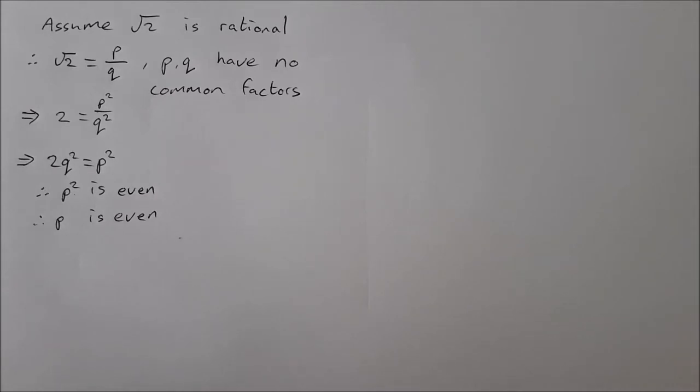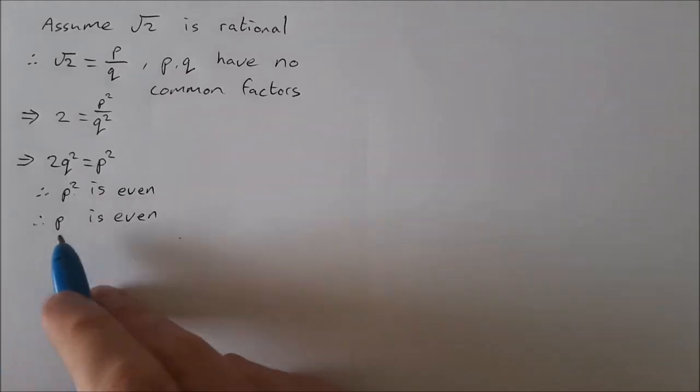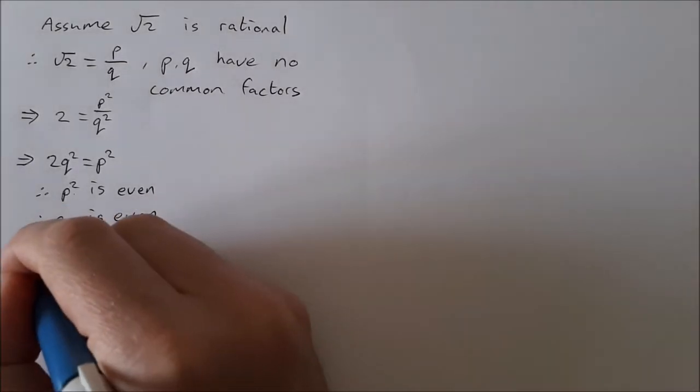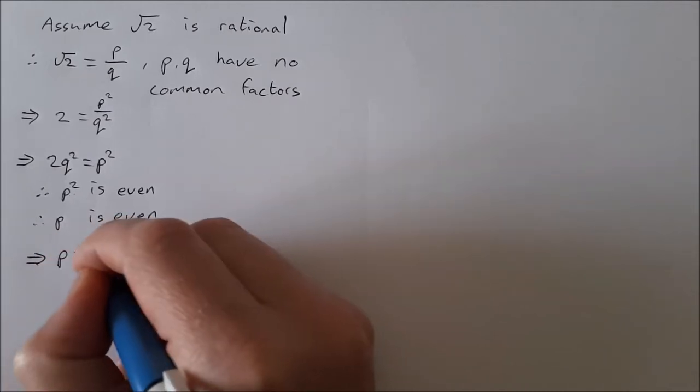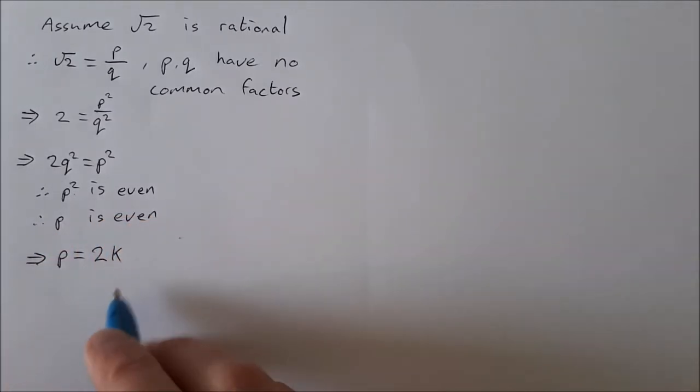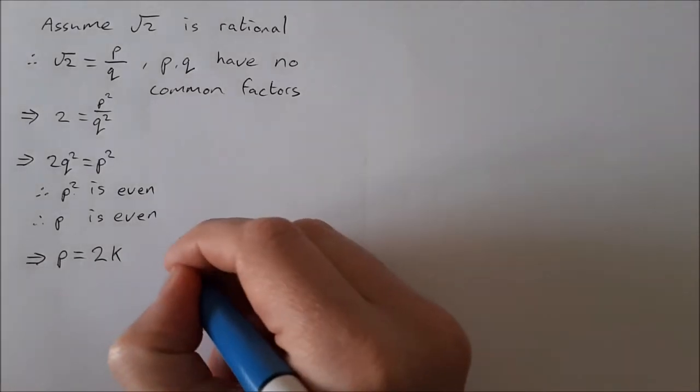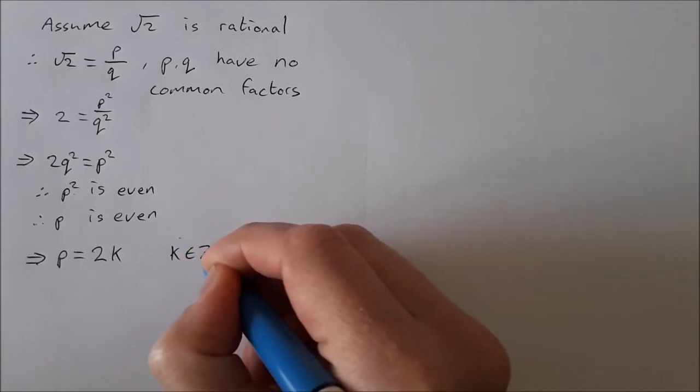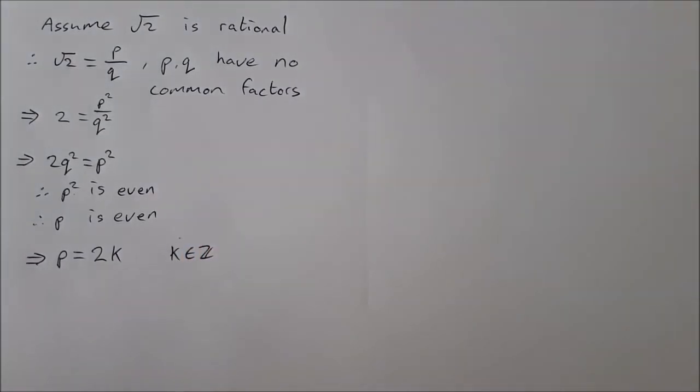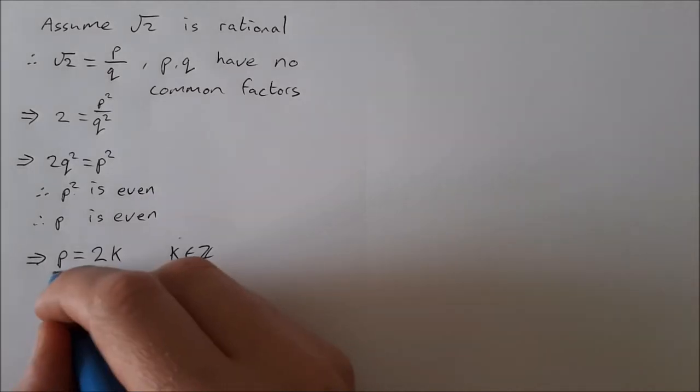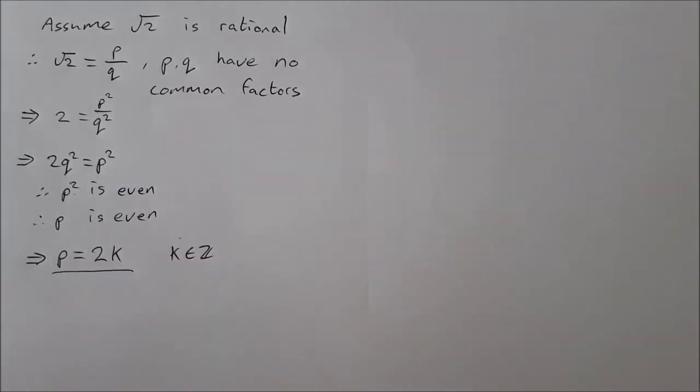So all the even numbers when you square them the answer is also even. So if p is even, p can be written as 2 times some number k. Any even number can be written as 2 times another number k is an element of z, so some integer.